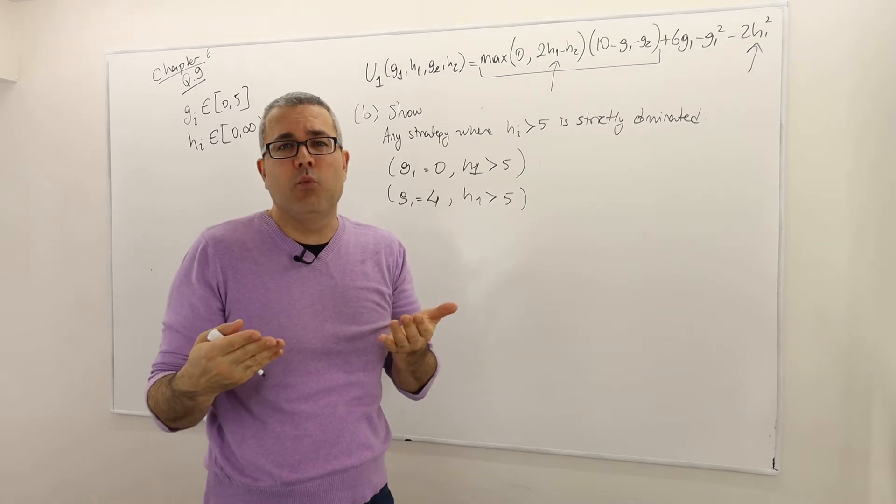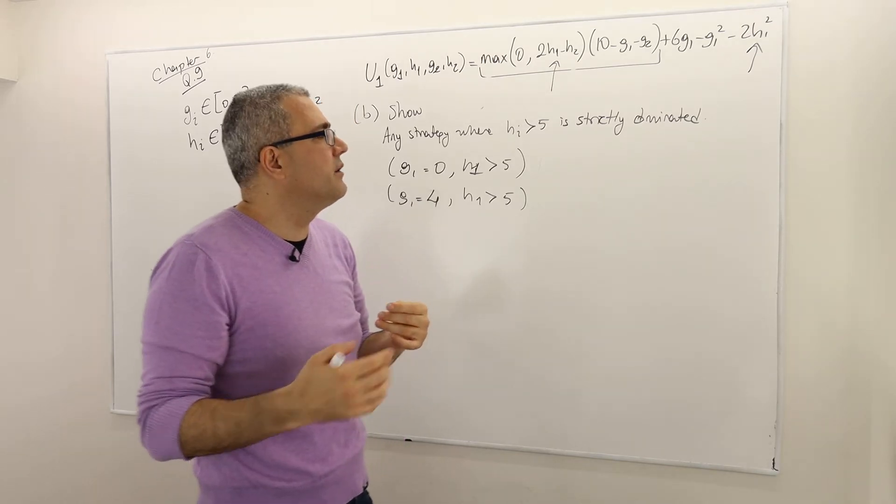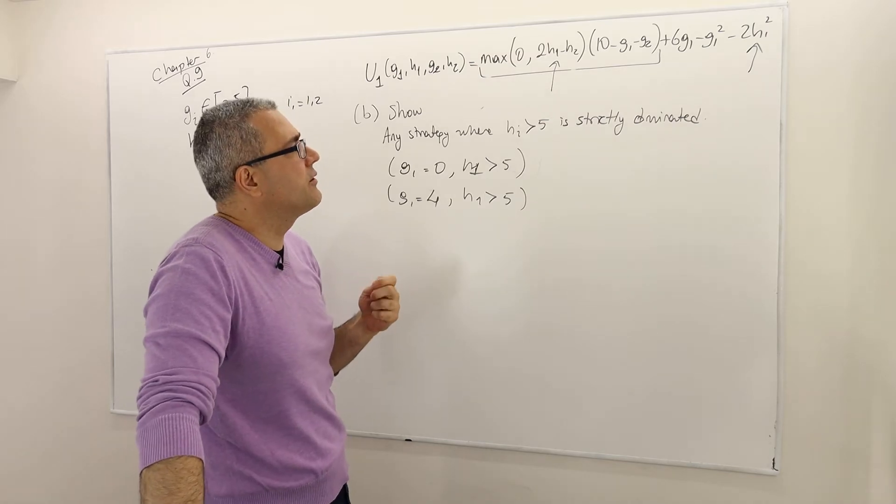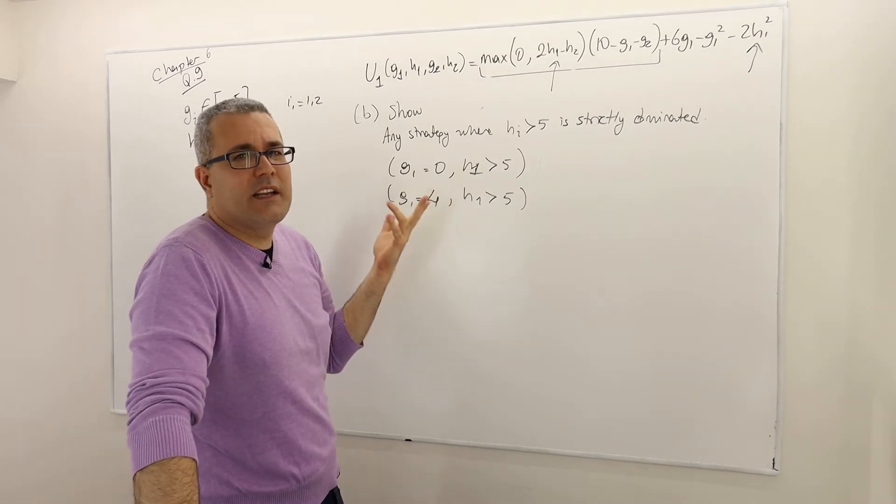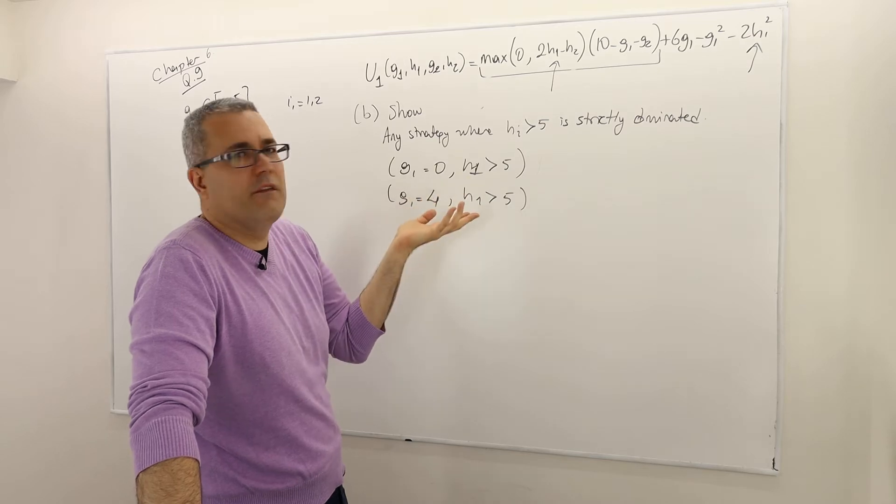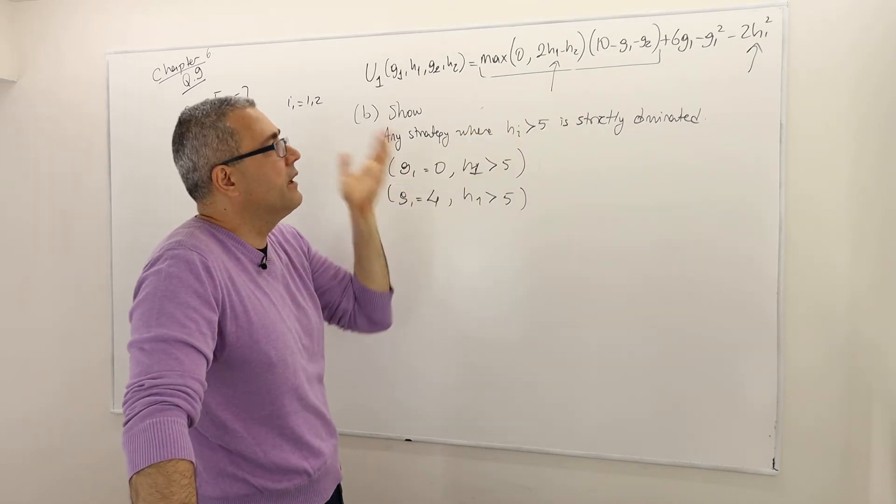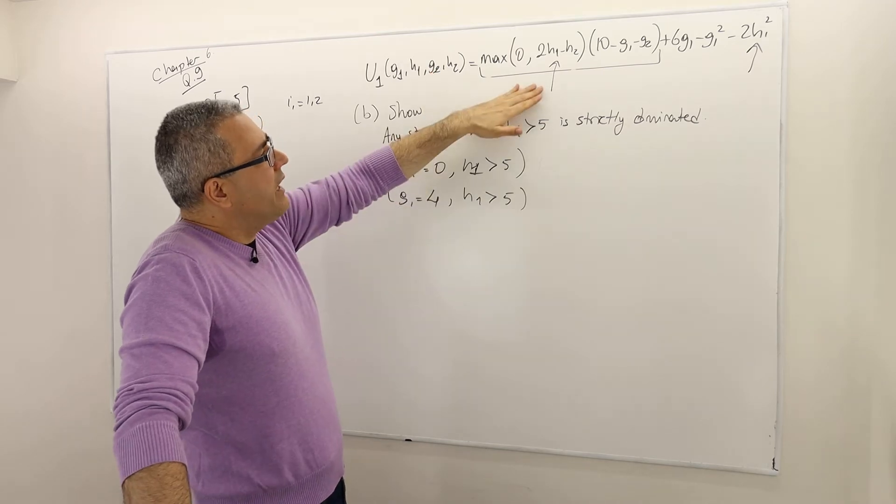So it's a good candidate why H1 is a strictly dominated strategy. I'm sorry, good reason why H1 is a strictly dominated strategy. But I mean, again, it doesn't explain why it is 5, for example. Why not 2? I mean, why 2 is not strictly dominated, I don't know.